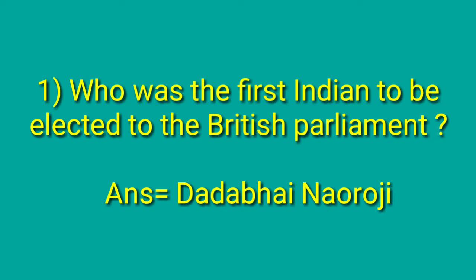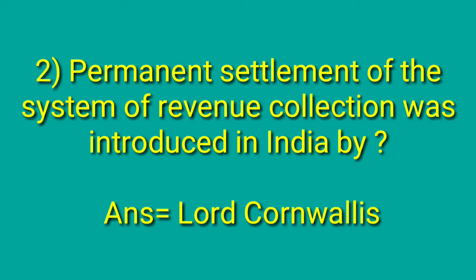Question one: Who was the first Indian to be elected to the British Parliament? Answer: Dadabhai Naoroji. Next, the Permanent Settlement system of revenue collection was introduced in India by whom? Answer: Lord Cornwallis.